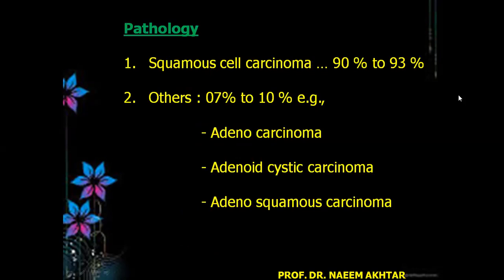Pathology: in 90 to 93 percent of the patients it is squamous cell carcinoma which is seen involving the esophagus. The other types of carcinomas, which range from 7 to 10 percent, are adenocarcinoma, adenoid cystic carcinoma, and adenosquamous carcinoma.